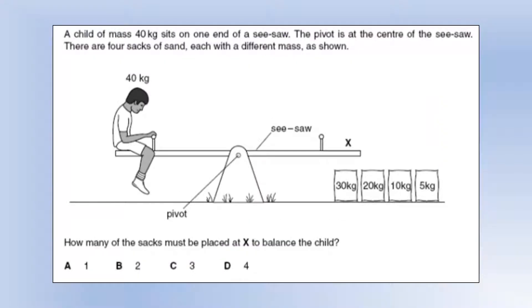A child of mass 40 kilograms sits at one end of a seesaw. The pivot is at the center of the seesaw. There are four sacks of sand, each with different mass. The key is the fact it says the center of the seesaw, so we essentially need the same mass as the child in order to balance it. So we need 40 kilograms, so we're going to need the 30 kilogram and the 10, so we're going to need two sacks.